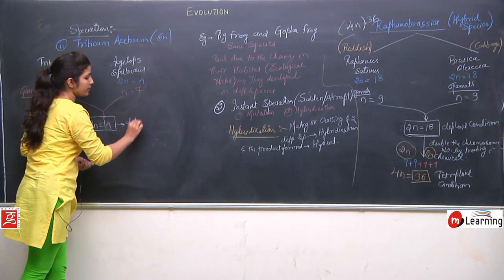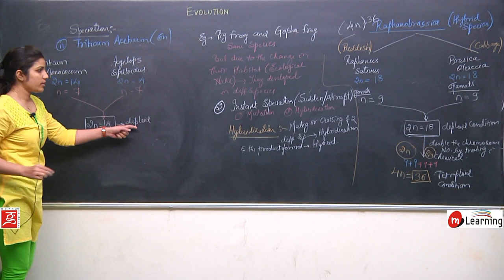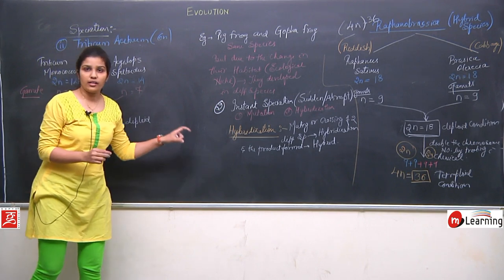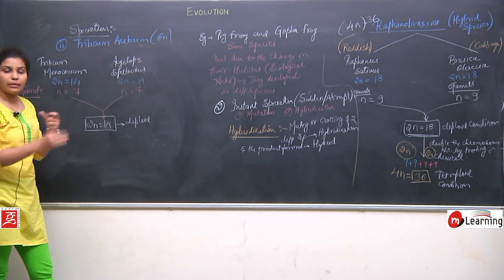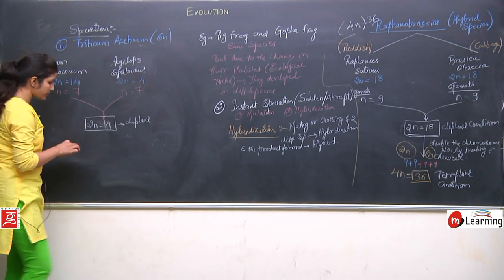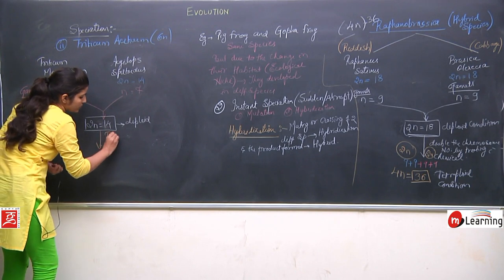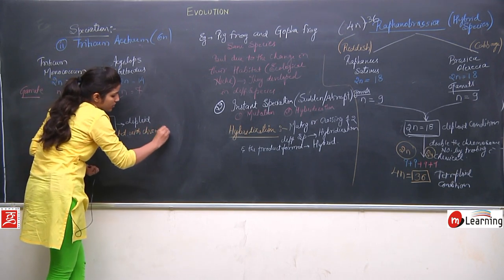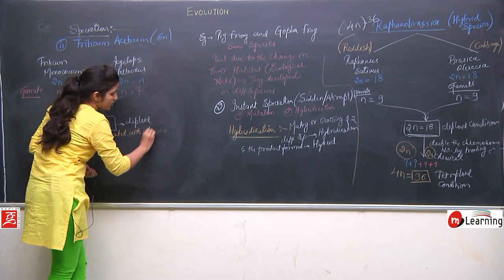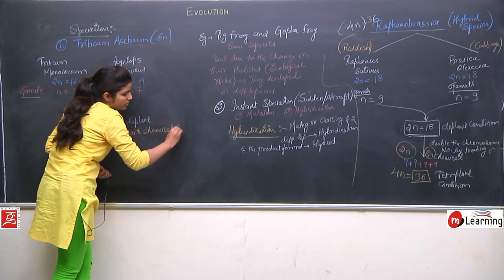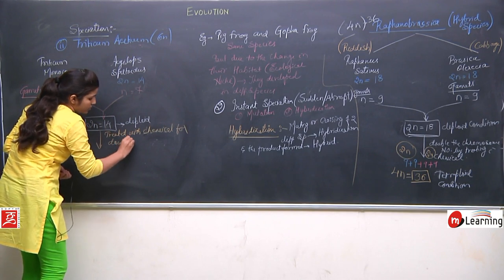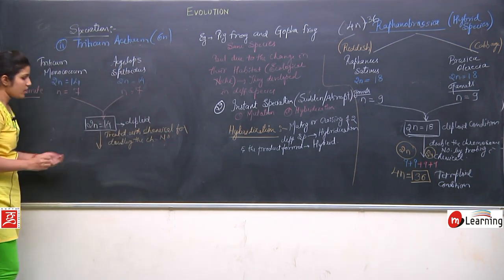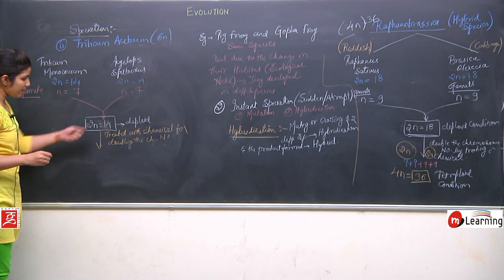This was the diploid condition, and again similar to the Raphanobrassica example, here also they treated it with a chemical for doubling the chromosome number.